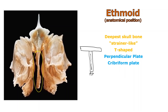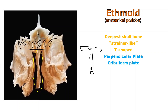If the perpendicular plate is the vertical part of the T, the cribriform plate represents the horizontal part of the T. I'll put CP here for cribriform plate, somewhere about right in here. Now it's hard to see in this image where the cribriform plate is, but notice how it's perpendicular to the perpendicular plate — which is where that name comes from.